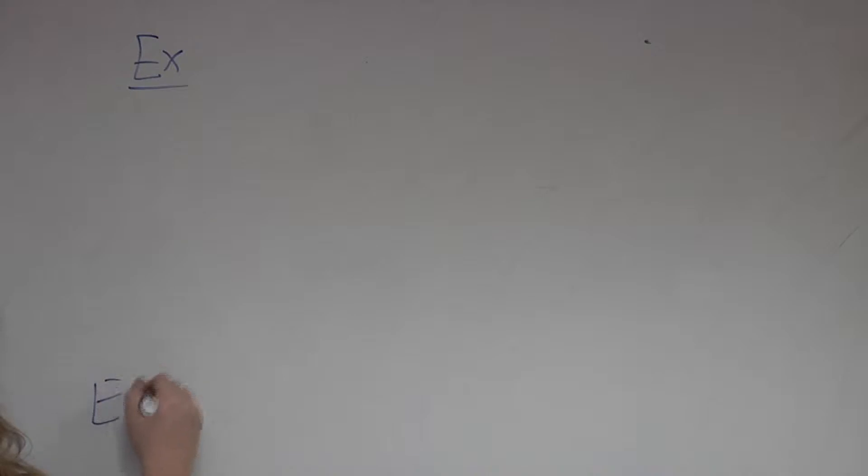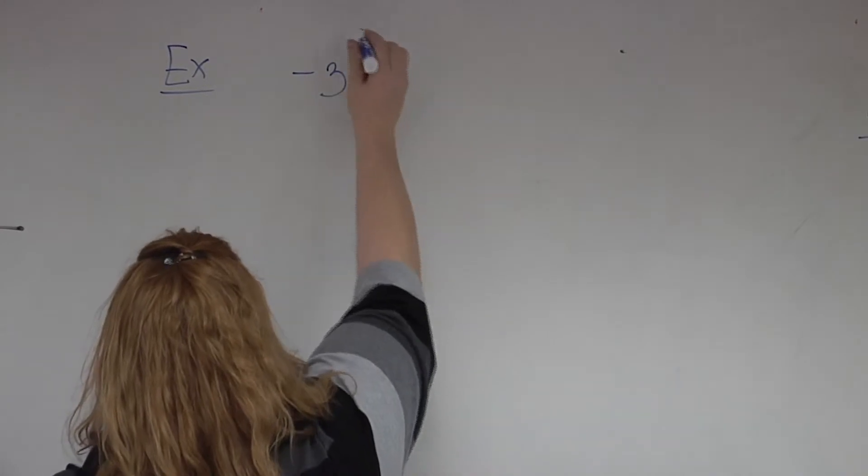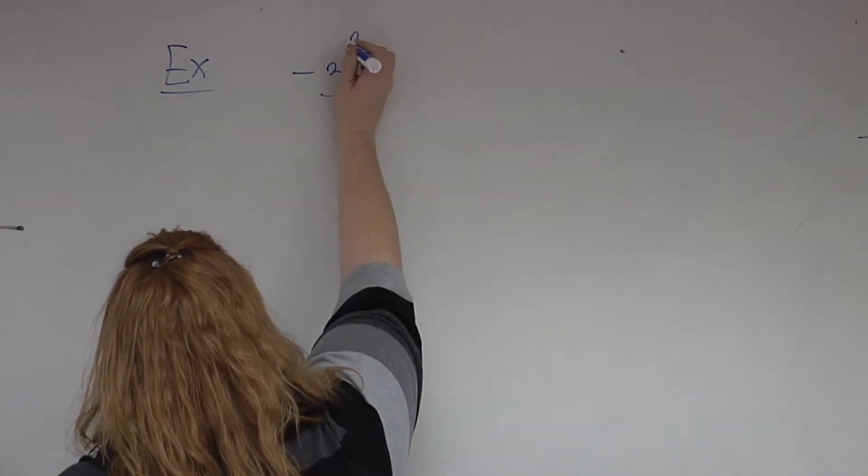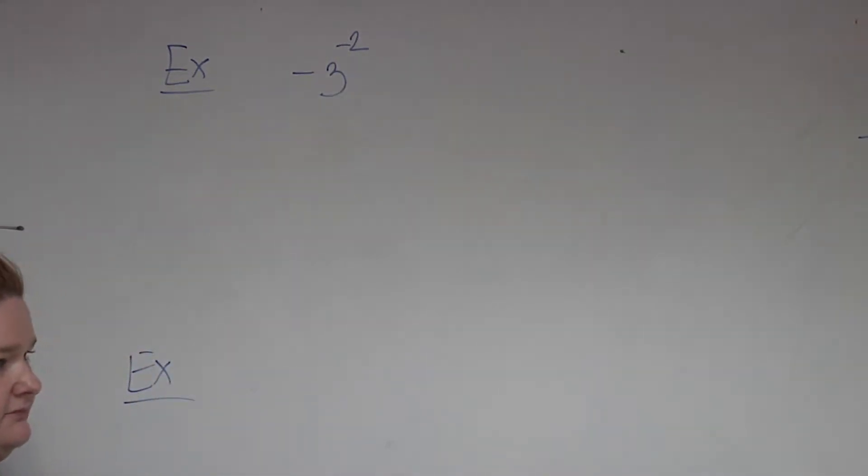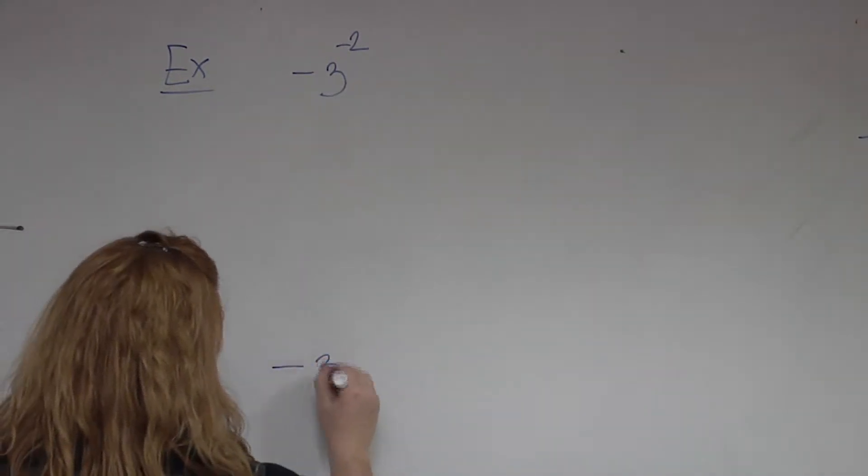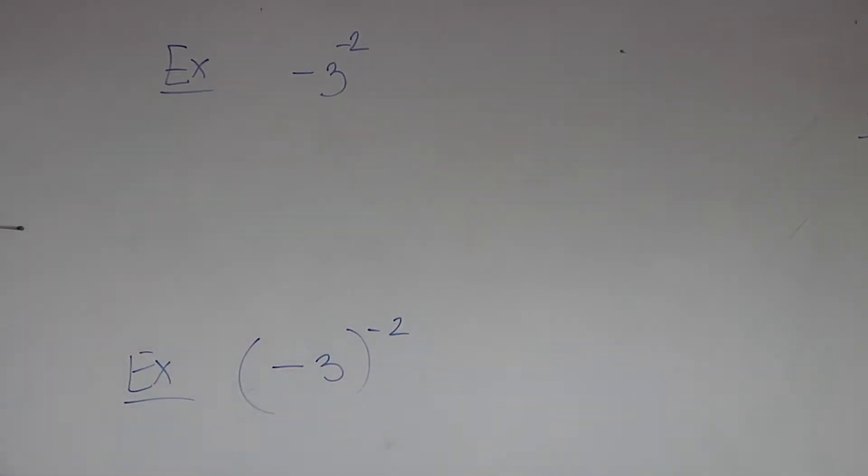So we're going to look at two problems. They're similar, but they're different. First one we're going to look at is negative 3 to the power of negative 2. And we're going to look at negative 3 to the power of negative 2. So this one, the negative is going to do exactly what this tells it to do. The 3 is also going to do exactly what this tells it to do.